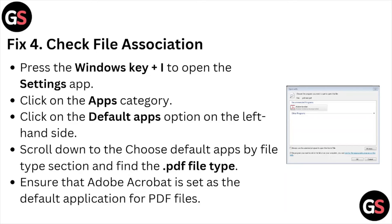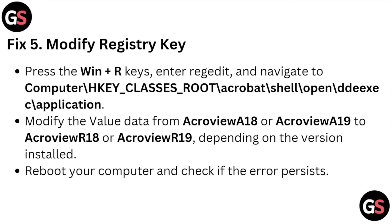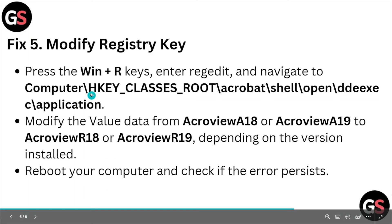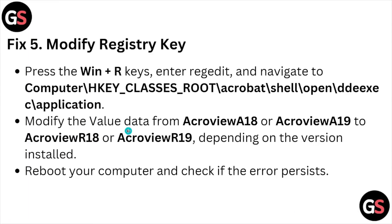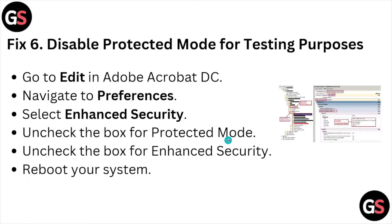Ensure that Adobe Acrobat is set as the default application for PDF files. Fix number five: modify the registry key. Press Windows key plus R, type regedit, and navigate to the relevant registry path. Modify the value data from AcroViewA18 or AcroViewA19 to AcroView, depending on the version installed. Reboot your computer and check if the error persists.